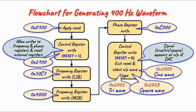This is a flowchart for generating a 400 Hz waveform with 0 phase shift. First, we initialize the device by writing a value into the control register, which will reset the device.